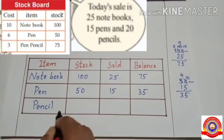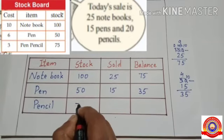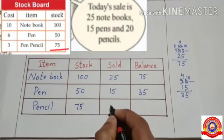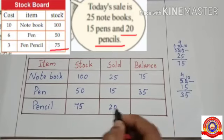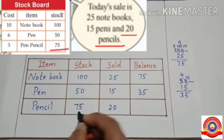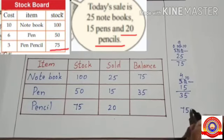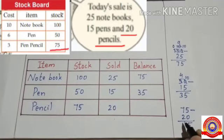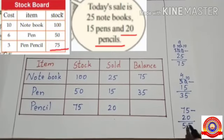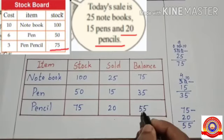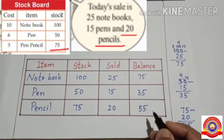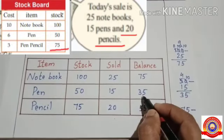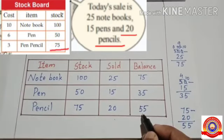Next, what is the total number of pencils? Yes, 75. How many pencils were sold today? Yes, 20. To find the balance number of pencils, subtract 20 from 75. 75 minus 20: 5 minus 0 is 5, 7 minus 2 is 5. So the balance number of pencils is 55. So children, now we have 75 notebooks, 35 pens, and 55 pencils.